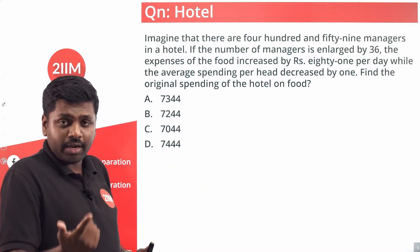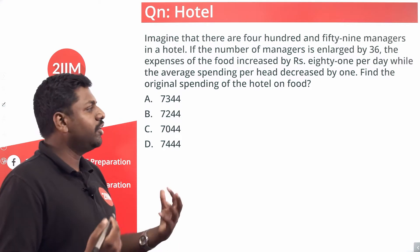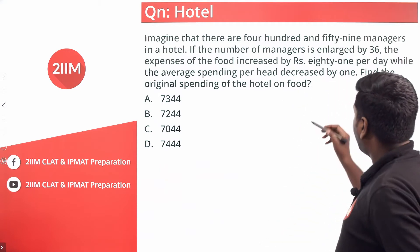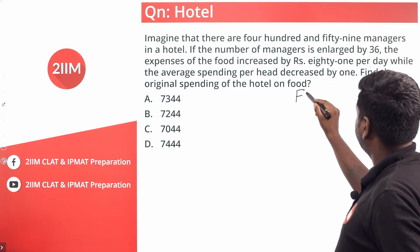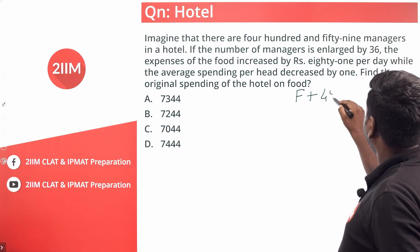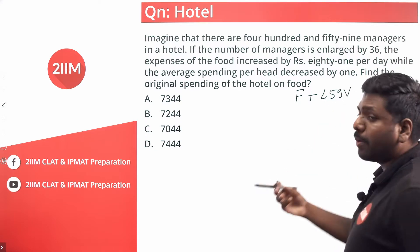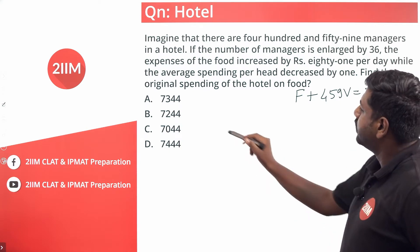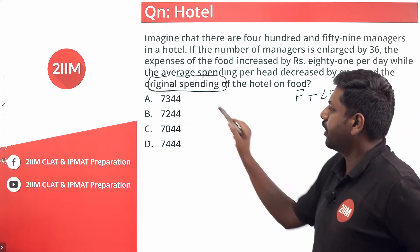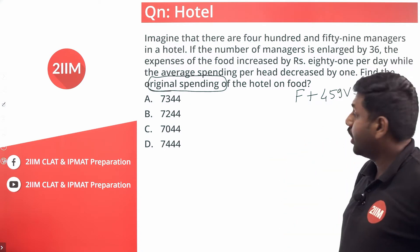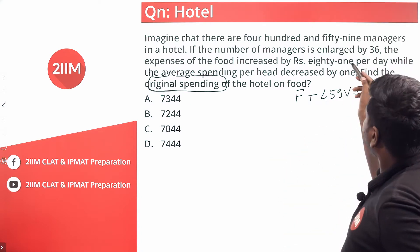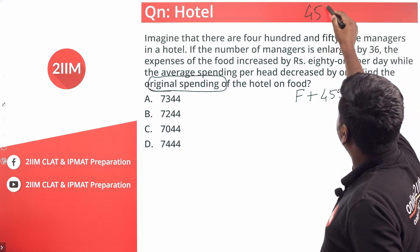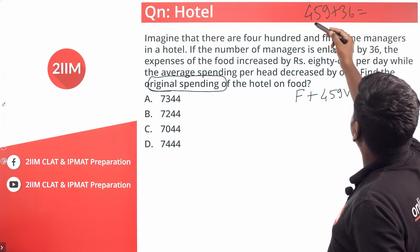We know there is going to be a fixed cost and a variable cost. We start by saying: fixed cost plus 459 times variable cost per plate equals x rupees. This x is the original spending that we are trying to find out.